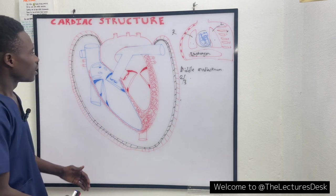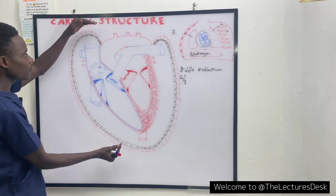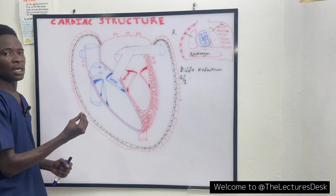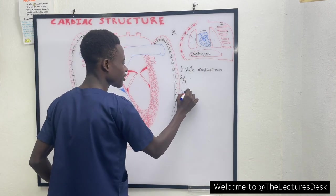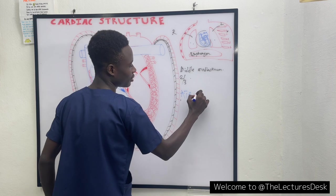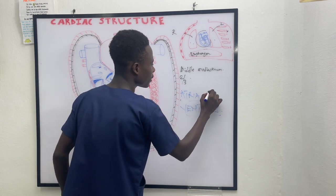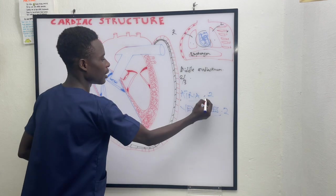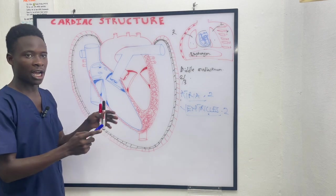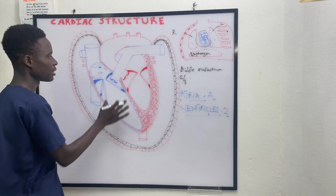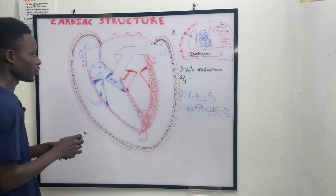Now let's take a good look at the heart. This is the longitudinal section of the heart. When you take the longitudinal section, you can see four main cavities: we have the atria and then the ventricles — two atria and two ventricles. These cavities form the heart, so we say the heart is a four-chambered organ.